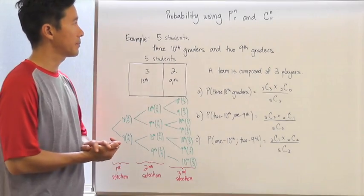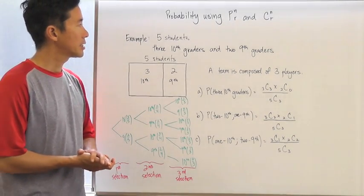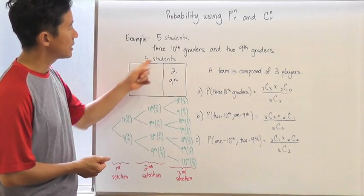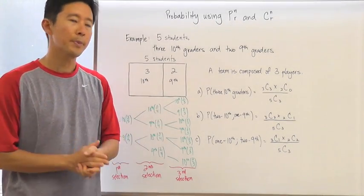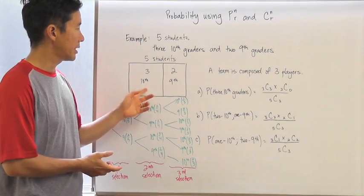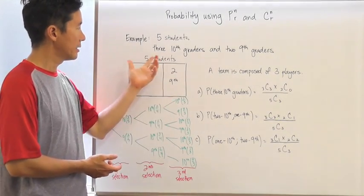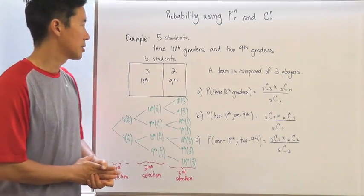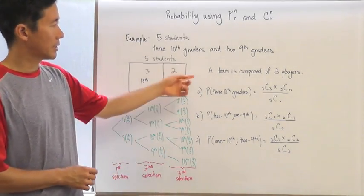Here's the example we'll use: five students, three are tenth graders and two are ninth graders. I've shown this visually — we have five students, three tenth graders and two ninth graders, and all five students are accounted for.